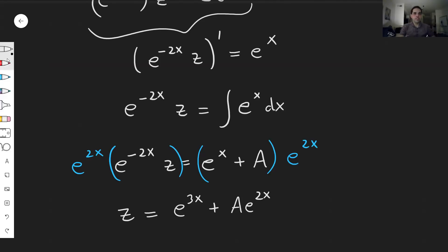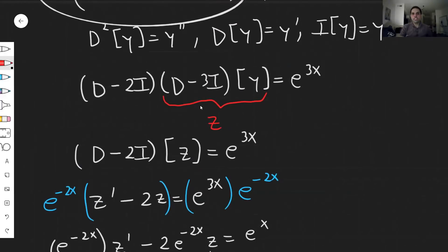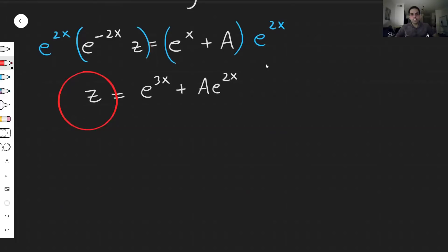But then the question is, what is our original function y? Well, remember what was z? It was (D - 3I)[y]. So let's just use this equation. So again, z is (D - 3I)[y]. And by definition, this is just y' - 3y. And this thing equals z. And remember, z was just e^(3x) + Ae^(2x).